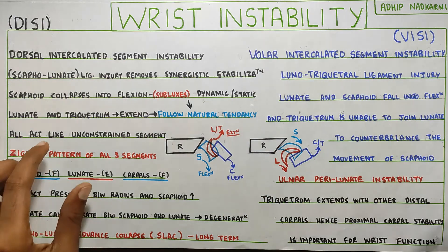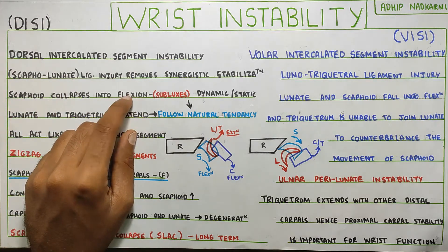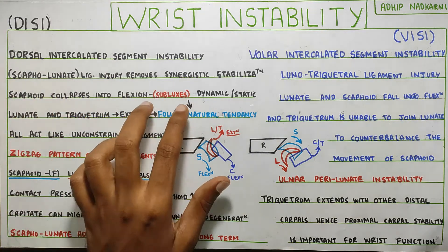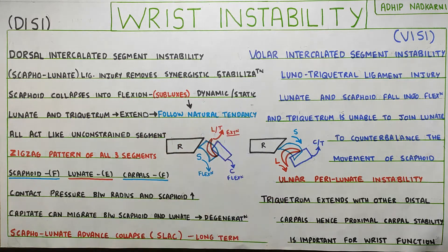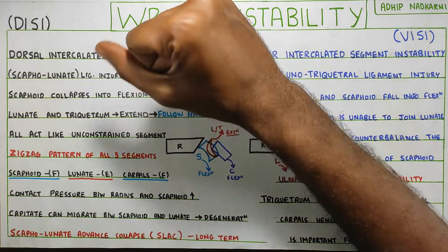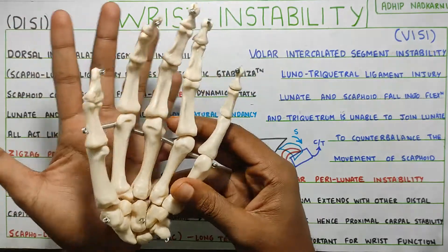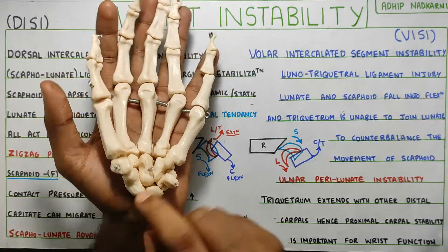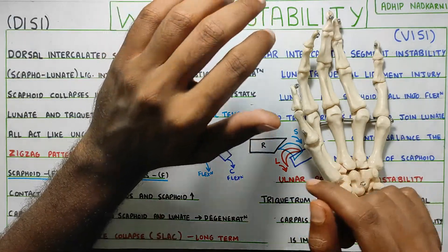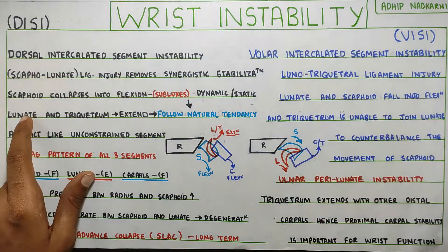What this does is your scaphoid, when movement is happening, will collapse into flexion — you can also call it subluxation. So the scaphoid subluxes into flexion, and this happens in a dynamic or static way, meaning it will always stay collapsed or during movement it will collapse into flexion. The scaphoid is located right below the thumb, and when movement happens, it collapses into flexion.